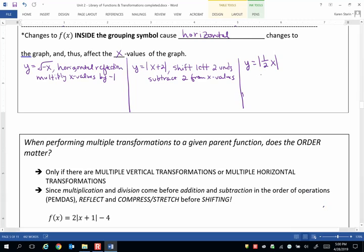So this is called a horizontal stretch because c is between 0 and 1, 1 half is between 0 and 1, and we multiplied x values by 1 over 1 half, which is really multiplying the x values by 2.